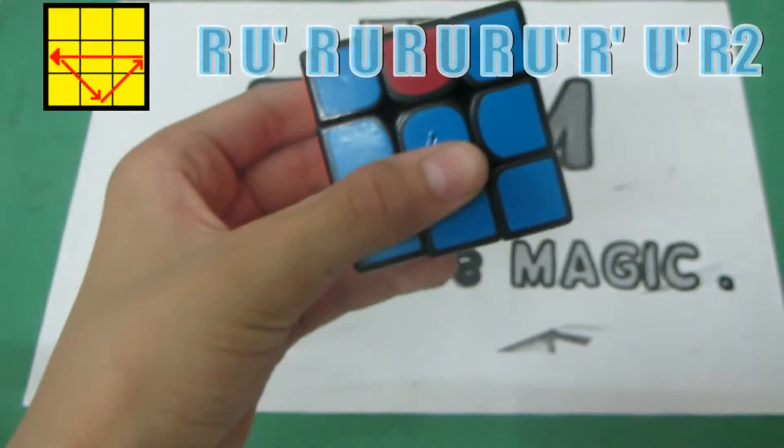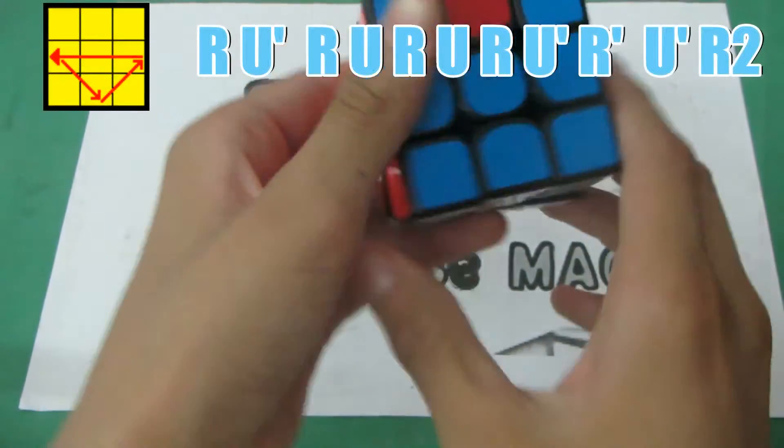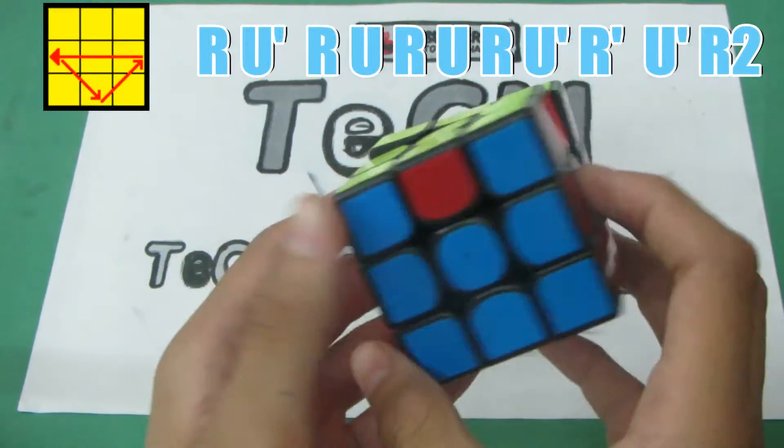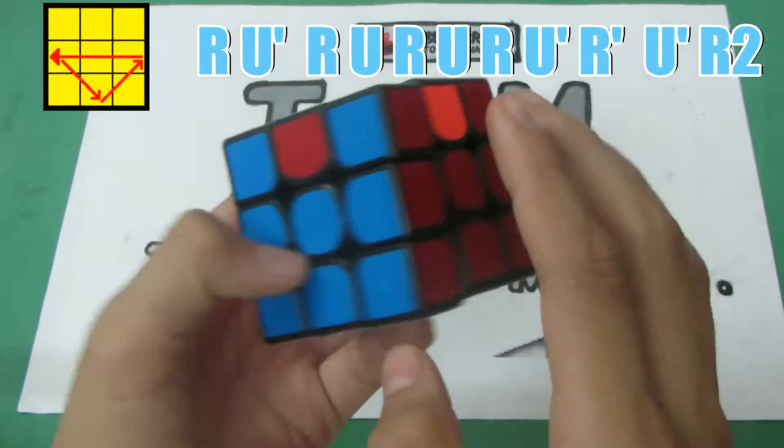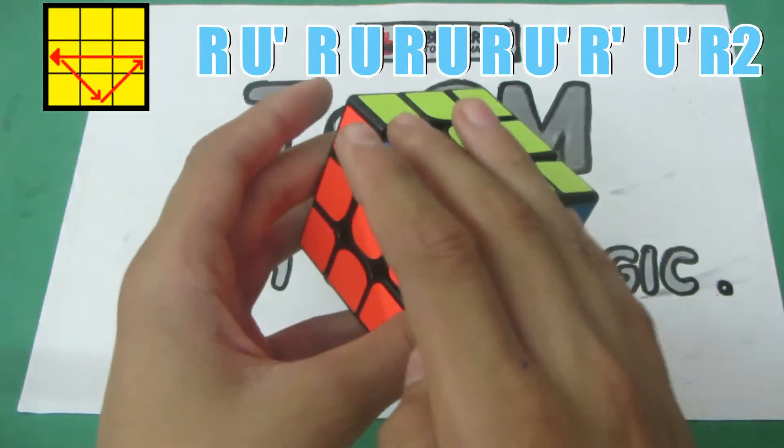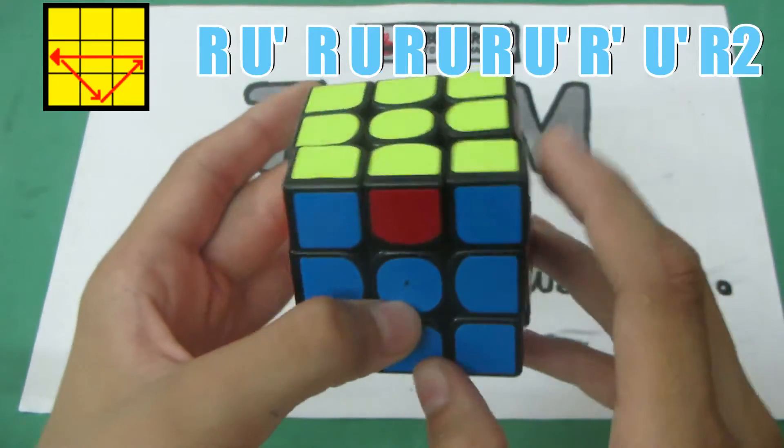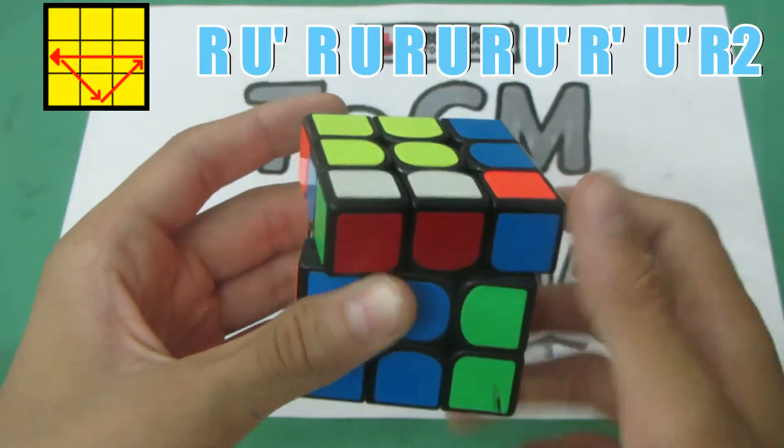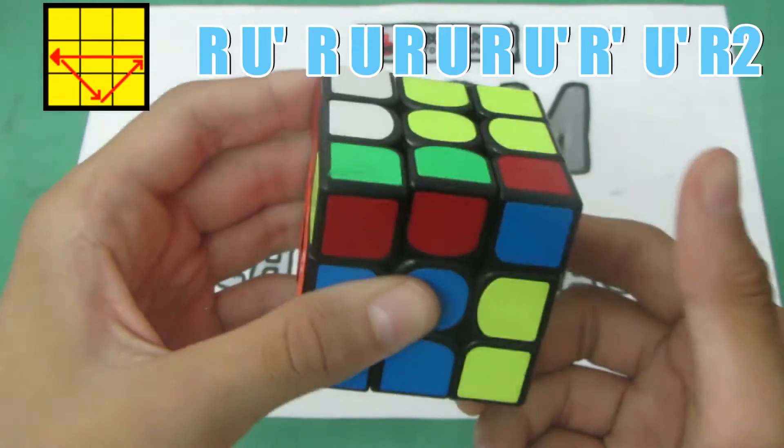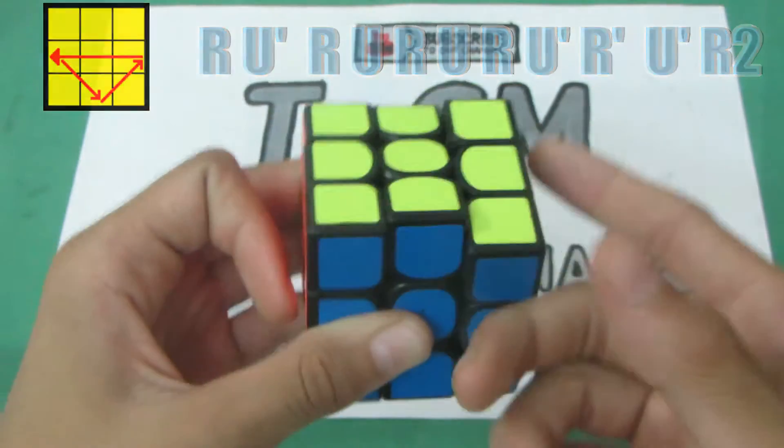Now the fourth algorithm is just the reverse of the third one. That is you need to swap the edges anti-clockwise. This one comes here, this one goes there and this one comes here. The algorithm is R U' R' U' R U R U' R' U' R2.